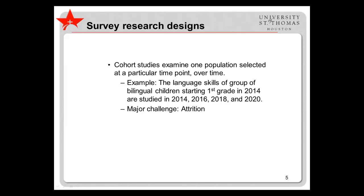The second type of longitudinal study is a cohort study, which examines one group repeatedly over time. For example, a researcher might look at the language skills of a group of bilingual children when they are first graders in 2014, and then again in 2016, 2018, and 2020. Although such studies can show change in a group over time, the downside to these studies is attrition. People often drop out, which leaves the researcher unsure about whether the findings are truly representative of the population, or only representative of the type of people who do not drop out.